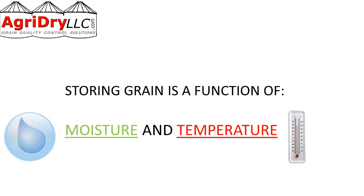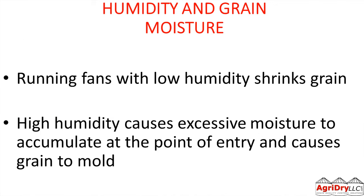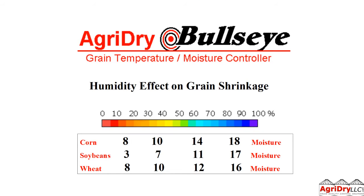Achieving uniform moisture is a function of moisture and temperature, and I'm going to come back to this several times. How does moisture play into it? Humidity. Running fans with low humidity is going to shrink grain. High humidity, you're going to add too much moisture. So we want to run right in this middle region — too low and grain gets too dry, too high and you're adding too much moisture.